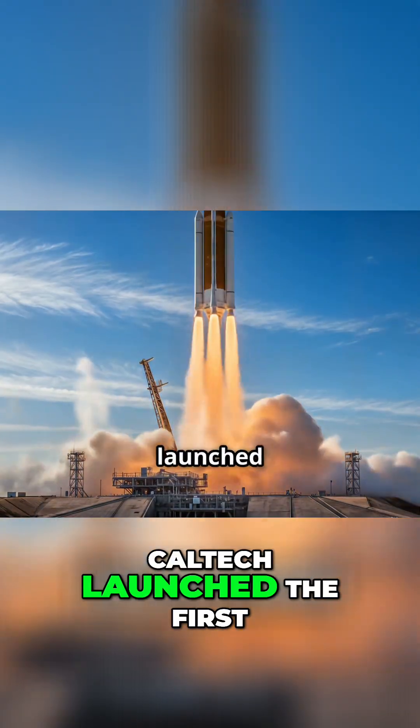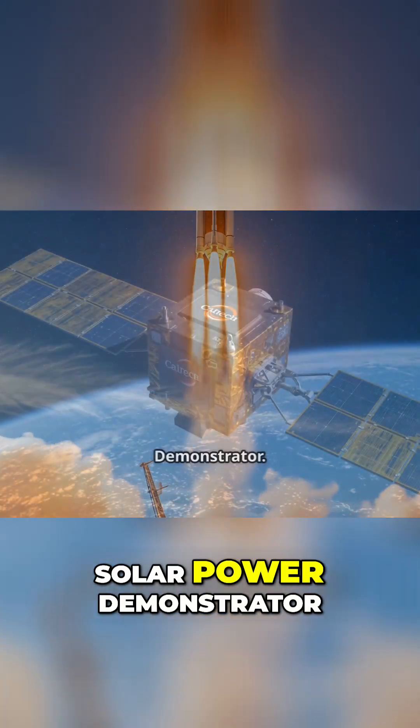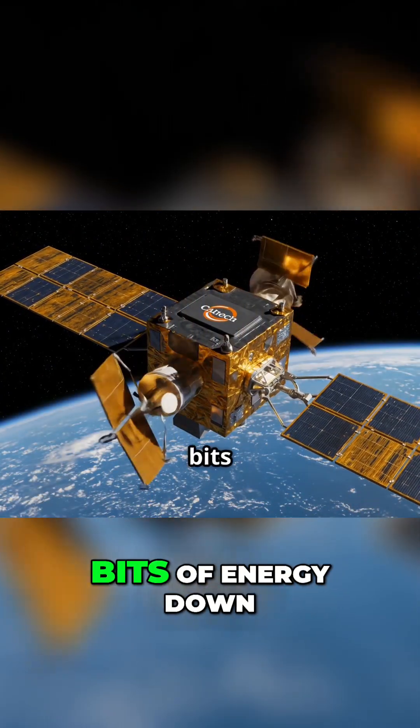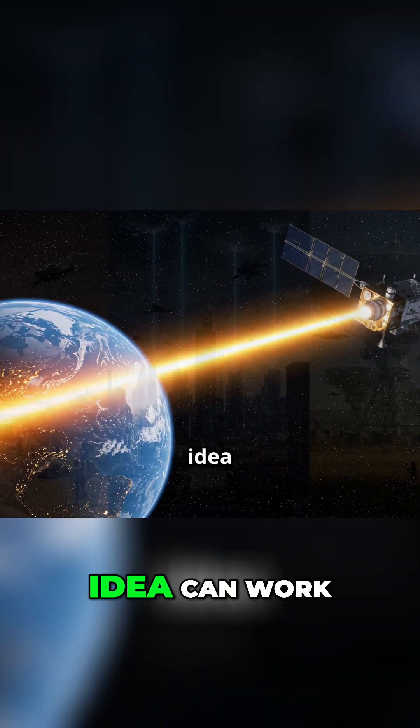This year, Caltech launched the first real test. It's called the Space Solar Power Demonstrator. It's already sending tiny bits of energy down from orbit. Proof that this wild idea can work.